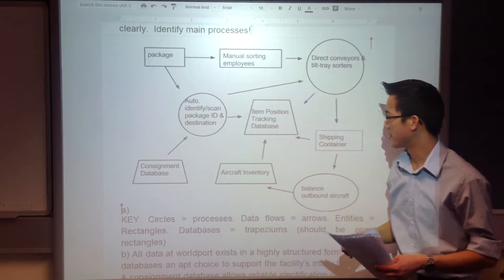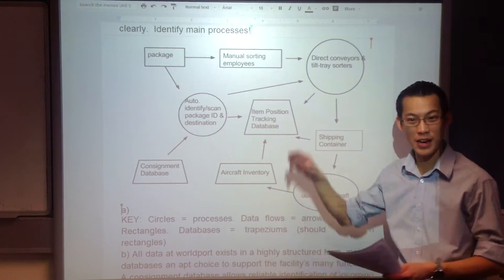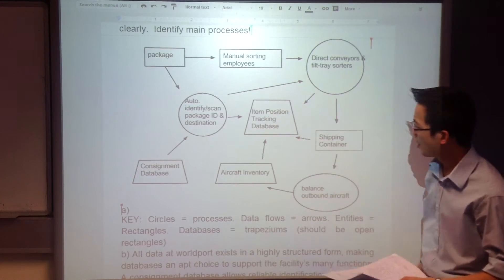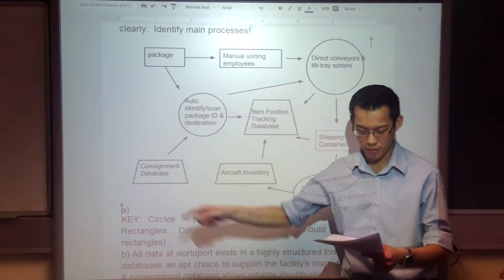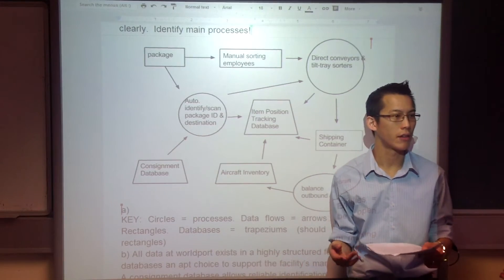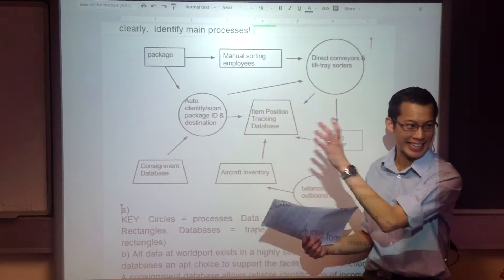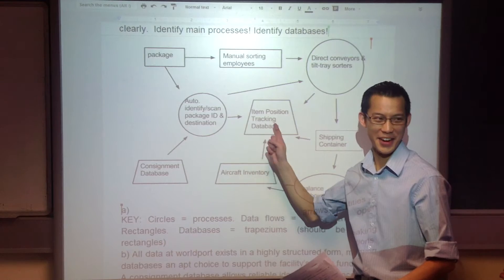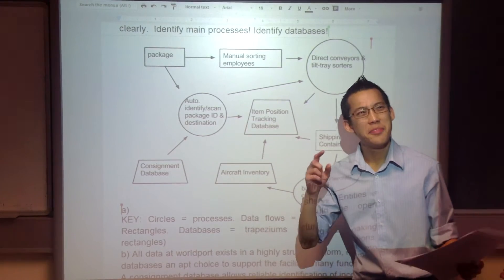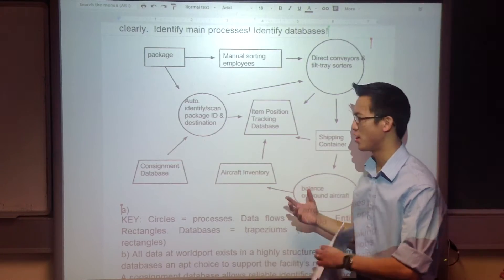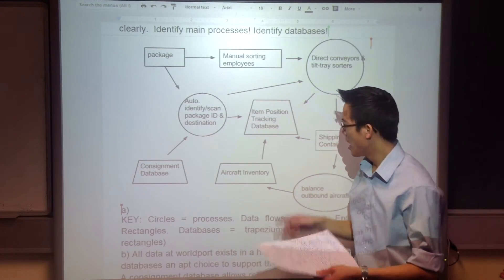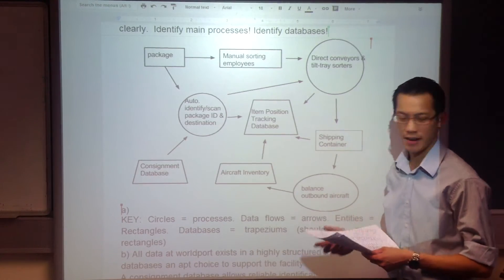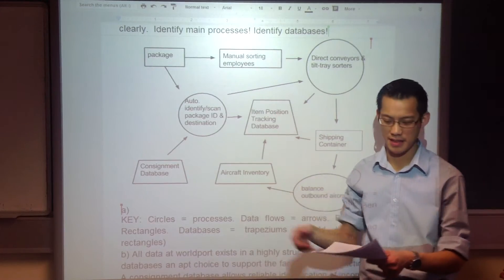The last mark was for the databases. These are an open rectangle — you've done them as trapeziums. There are three databases I could think of. Some of you elected to just have one big gigantic database in the middle — 'the database.' That can be okay, but it tended more often than not to make your diagram a disaster. If you break it apart — which does make sense to break it apart this way — then your data flows are all heading to the right spaces and are more specific.